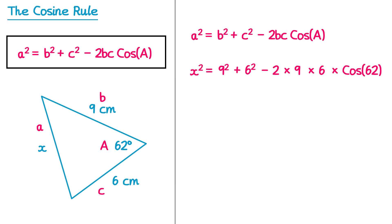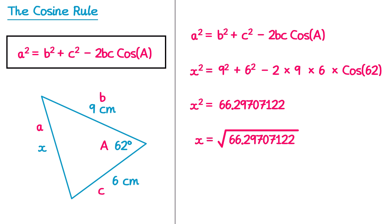We then leave this left hand side as x squared and type this whole right hand side into your calculator. If you do that for this question you'll end up with this number here. Then we just square root both sides, so x will equal the square root of that number, and if you type that into your calculator you'll get this answer here. Once again I'm going to round this to one decimal place, so the answer to this one is 8.1 cm.